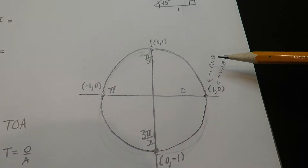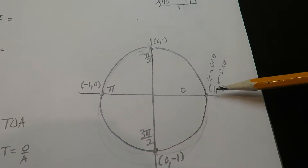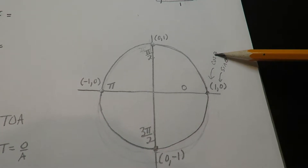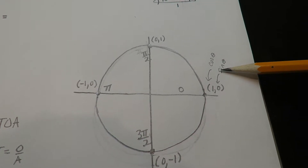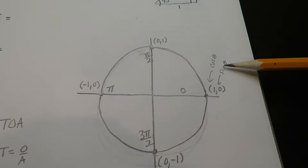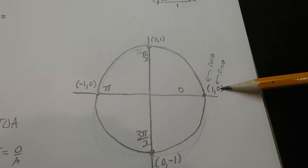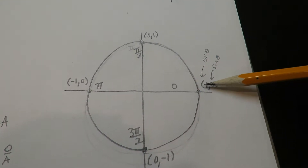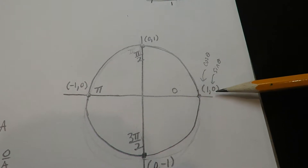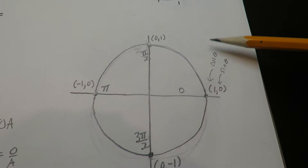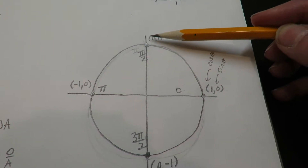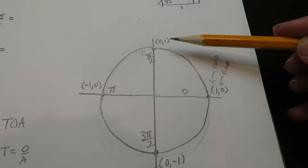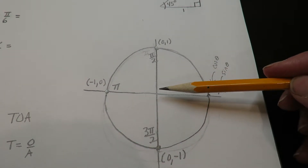How we use this is: the first output is whenever you're trying to take the cosine of an angle. Whenever you're trying to take the sine of an angle, that's the second output. So the cosine of zero is one and the sine of zero is zero. The cosine of pi over two is zero, and the sine of pi over two is one. That's how we use this tool.